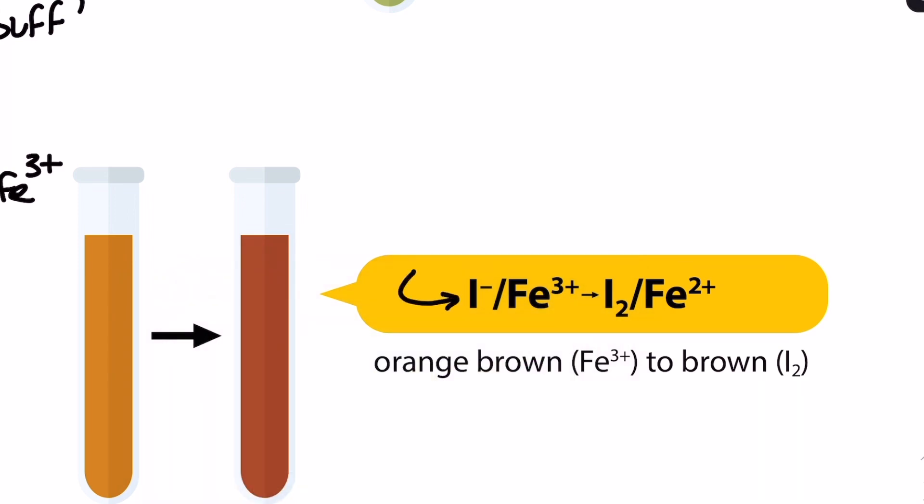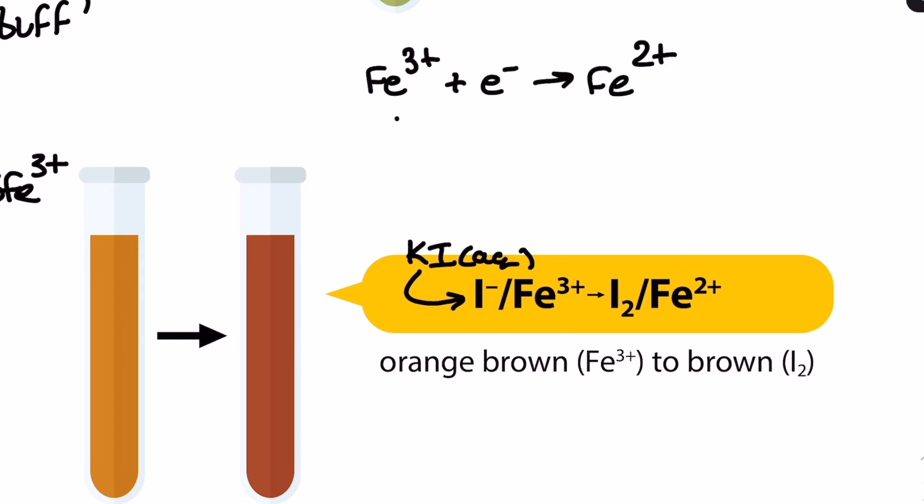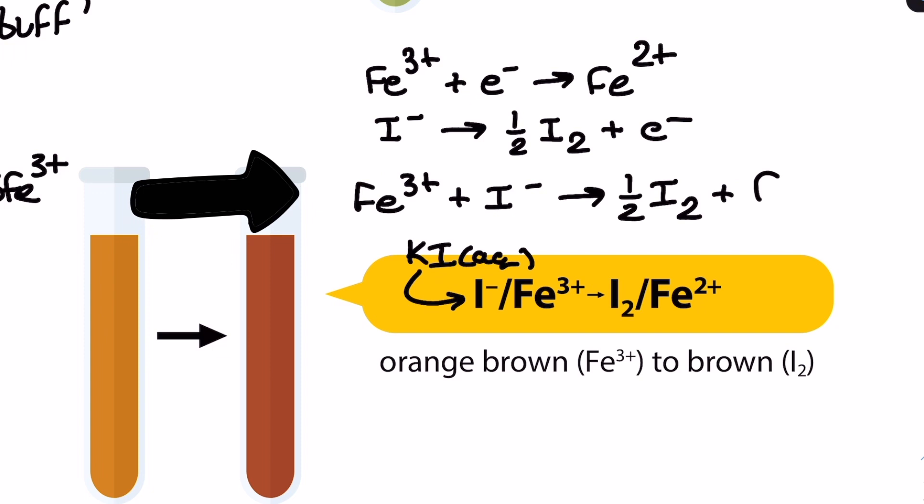The second redox reaction here is focusing on iron III being reduced to iron II using iodide ions, likely from potassium iodide solution. Again it uses half equations but they're much simpler and require no mention of acidic conditions. Again I'd expect you to be able to assemble these half equations and then combine them using your knowledge of the redox topic in the second year of the OCR-A A level in chemistry.